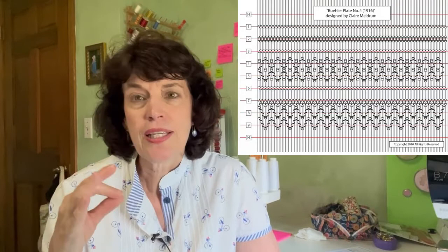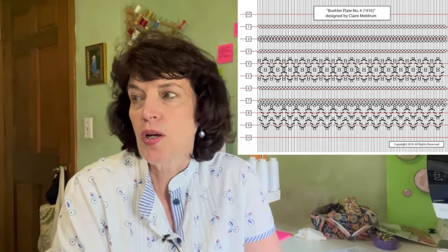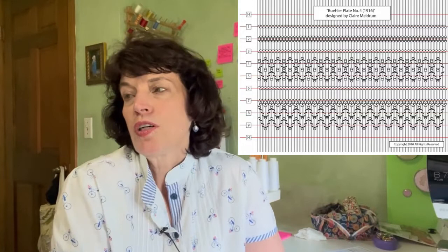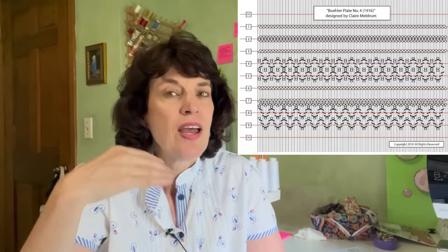So for example, on this one from Simplified Smocking, you could easily cut out rows two, three, and six, which are cable rows, and just then shift the bottom rows up. Or you could cut out rows four and five and condense the design together. Have fun with it. There's a lot of different ways to do this.